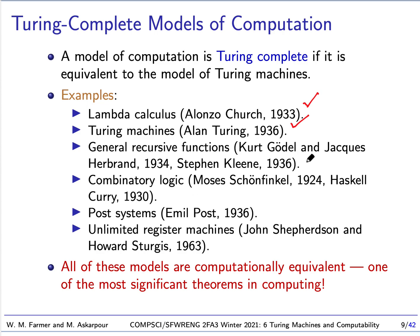Another model of computation is combinatory logic, still of great interest today, developed by Moses Schönfinkel and further developed by Haskell Curry. And finally, Post Systems, developed by Emil Post. These early models of computation all turned out to be equivalent to Turing machines, and therefore equivalent to each other.